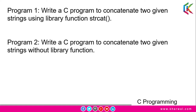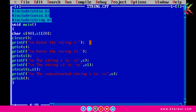In this lecture I will show you how we can concatenate two given strings using a library function and without using a library function. Let me first open up the Turbo C++ compiler. In this program we will learn how to concatenate two strings using the library function strcat().